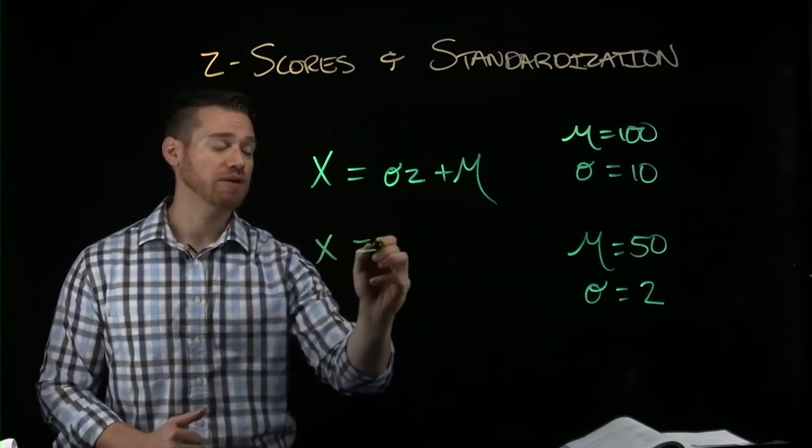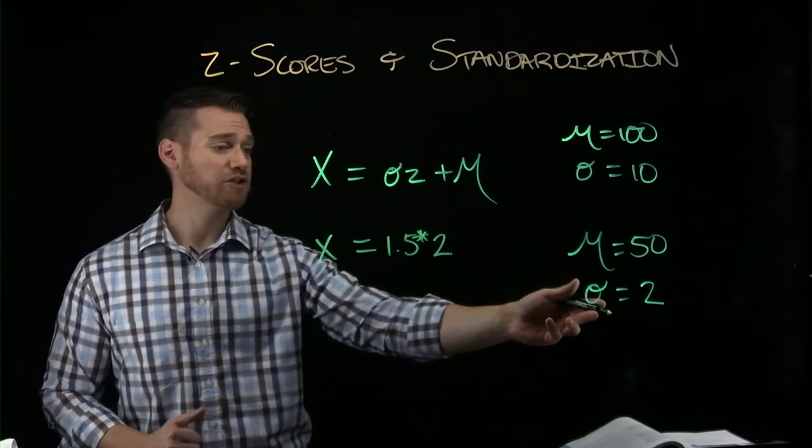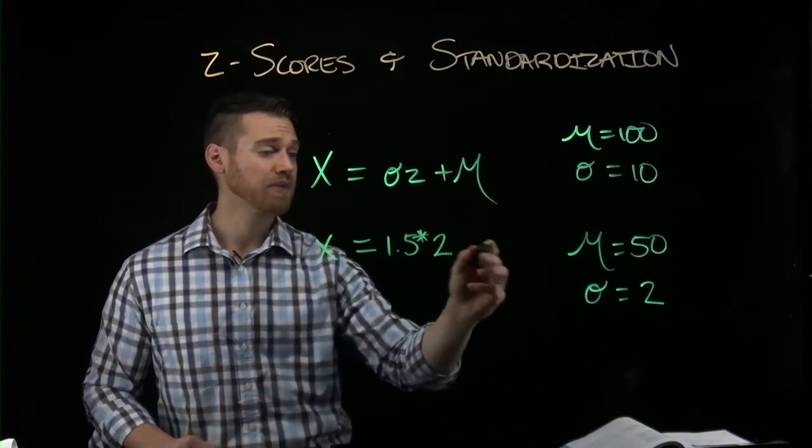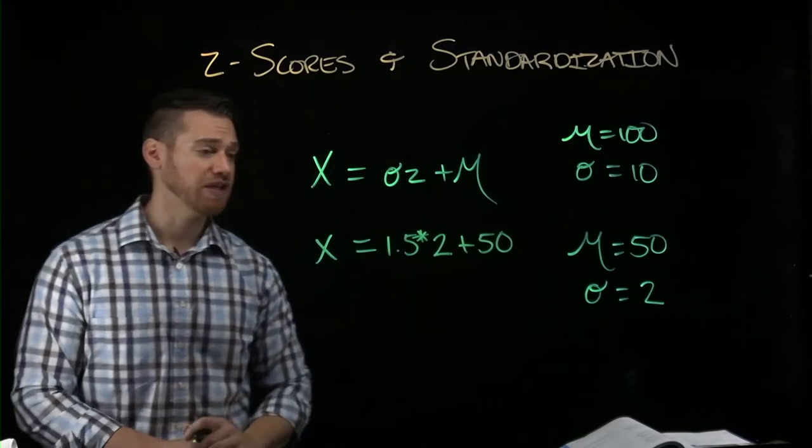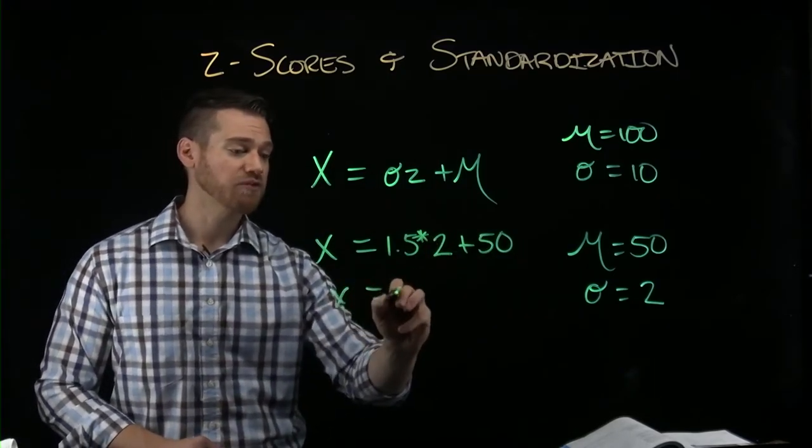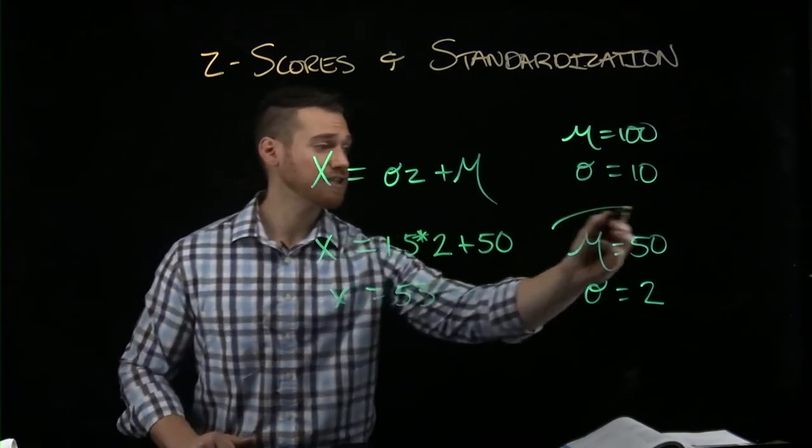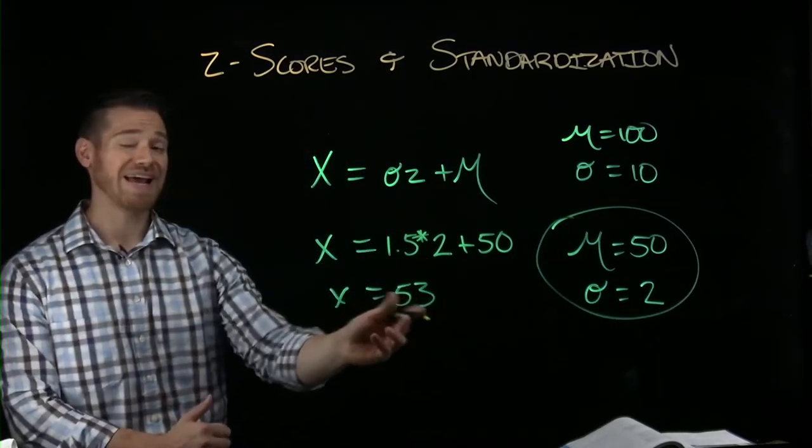So if we have an X score we want and we know the Z score is 1.5 and we now want a two standard deviation instead of a 10, and then we want it to be centered around 50, we can do this and we get X equals 53. So a Z score of 1.5 in this distribution would be an X score of 53.